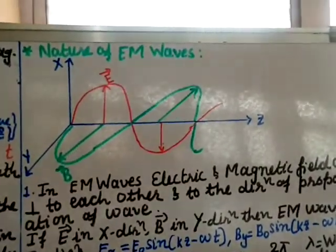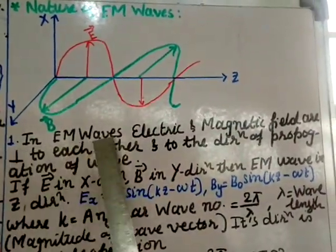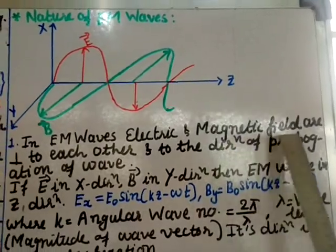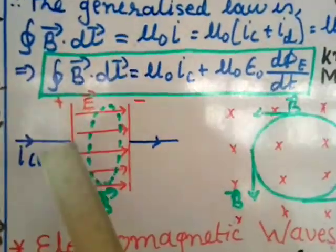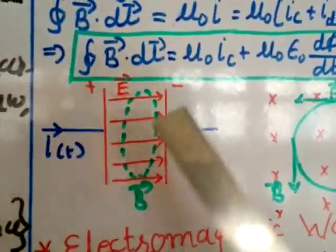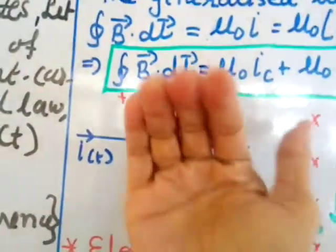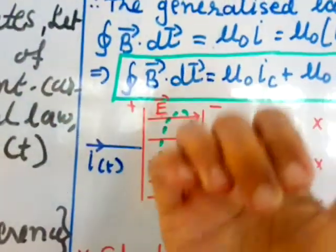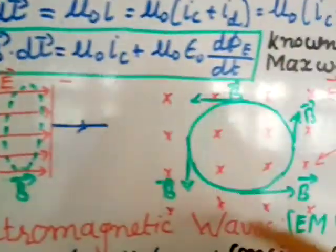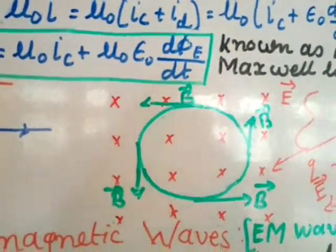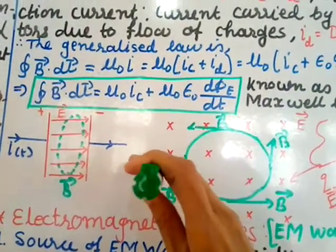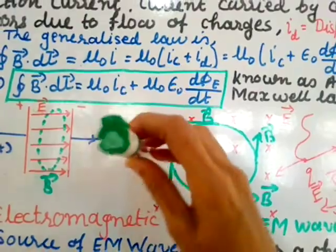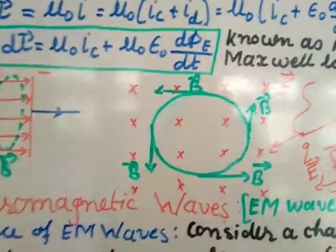Nature of EM Waves. Property 1: In EM waves, the electric and magnetic fields are perpendicular to each other and to the direction of propagation. We can see that the electric field is going in one direction and the magnetic field is in a circular/perpendicular direction. So the electric field is like this and the magnetic field is like this — they are perpendicular to each other.